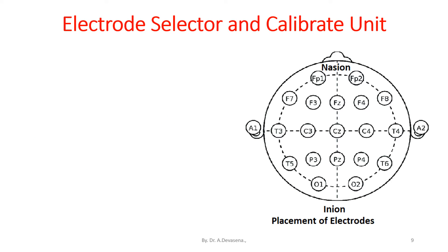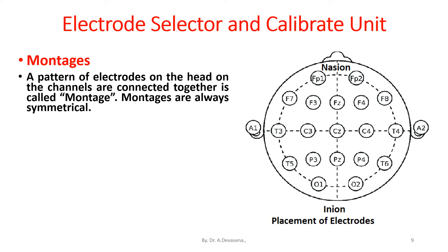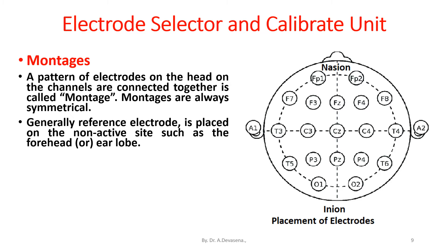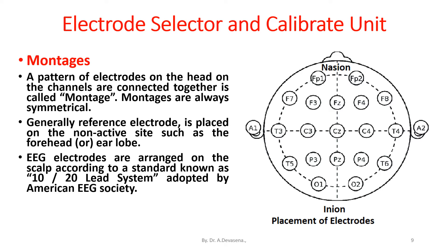Montages. A pattern of electrodes on the head, on the channels, connected together, is called a montage. Montages are always symmetrical. Generally, a reference electrode is placed on the non-active side, such as forehead or earlobe. EEG electrodes are arranged on the scalp according to a standard known as the 10-20 lead system adapted by the American EEG Society. There are 21 electrode locations in the 10-20 system.